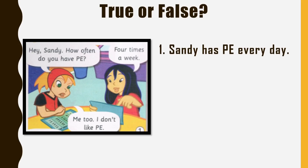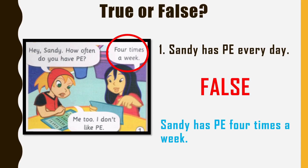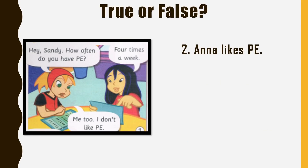I have already given you a picture here — the one with yellow hair is Anna and the one with black long hair is Sandy. The statement says Sandy has PE every day. When Anna asked Sandy how often she has PE, Sandy said four times a week. In one whole week there are only five days of schooling, so Sandy does not have PE every day. The answer is false.